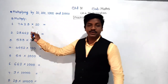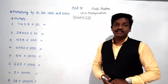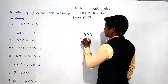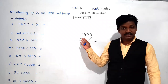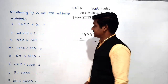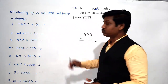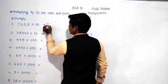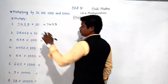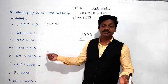Now let's solve Practice 4.5. First example: 7423 into 10. If you think traditionally you would multiply step by step — but never do that. When multiplying by 10, write the number 7423 as it is, and since 10 has one zero, put that one zero at the end. Finish! The answer is 74230, immediately.